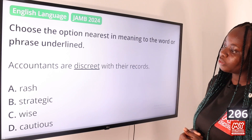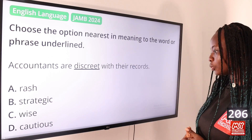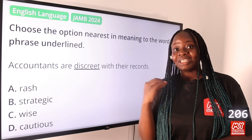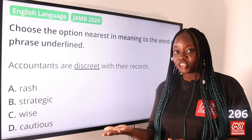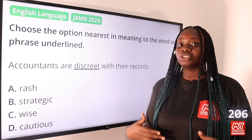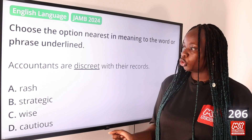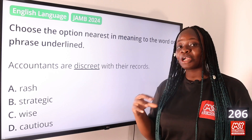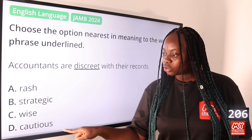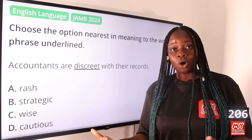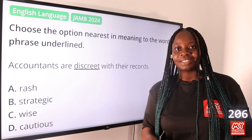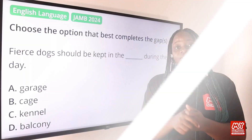Question 206: 'Accountants are discreet with their records.' Option A: rash, B: strategic, C: wise, D: cautious. The answer is option D, cautious. To be discreet means to maintain a level of privacy and confidentiality, using careful judgment when handling a document or instructions. Cautious also means to use careful judgment when handling something, so option D is the answer.